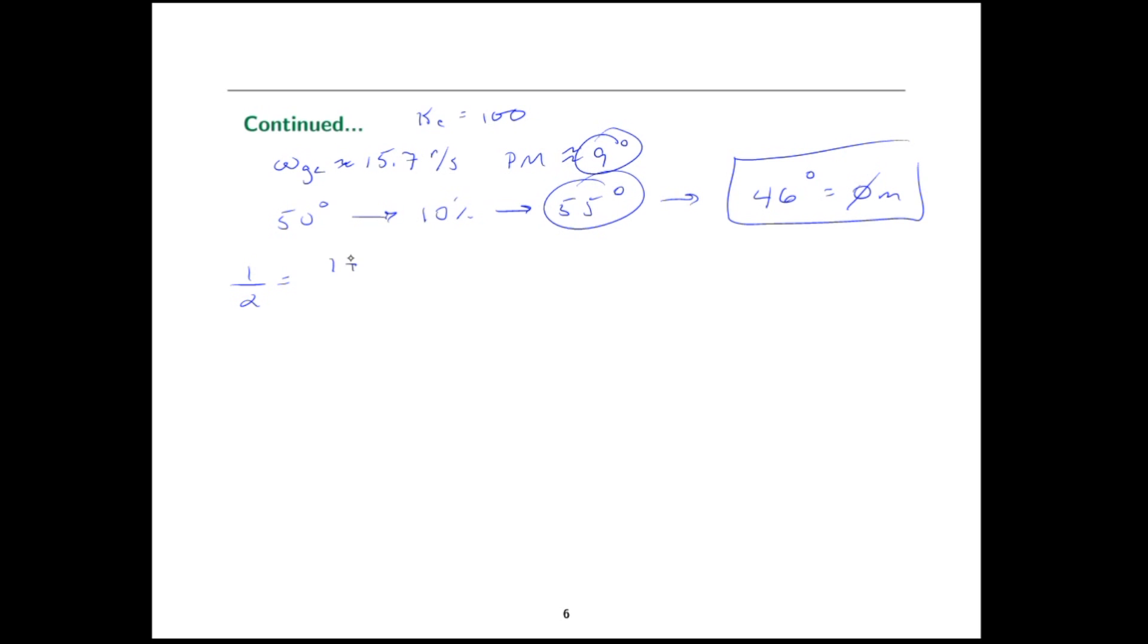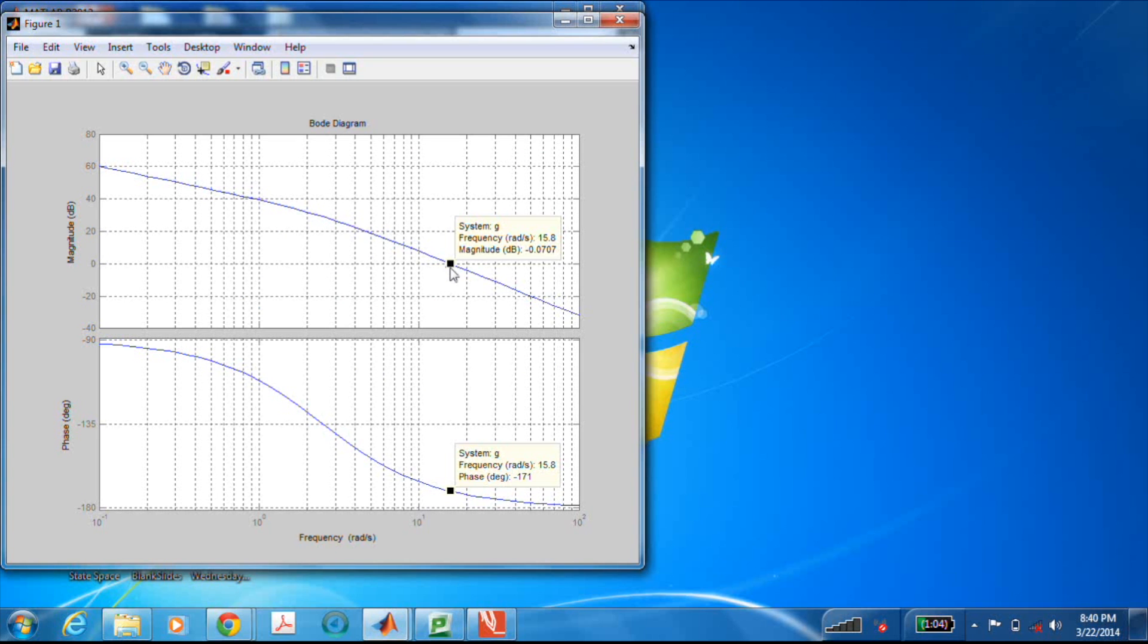That means that 1 over alpha, which is 1 plus sine phi m over 1 minus sine phi m is about 6.1, which also means that alpha is about 0.16. Now what we need to do is find out how much the magnitude plot is going to shift. The amount of shift in the magnitude plot is going to be 10 log 1 over alpha, and that is about 8 dB. So let's go back to the Bode plot and find the frequency where the magnitude plot is negative 8 dB. So let me shift this dot down to negative 8 dB and we see that the frequency is at 25 radians per second. That's our omega m.